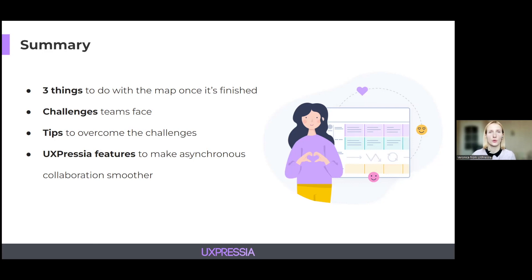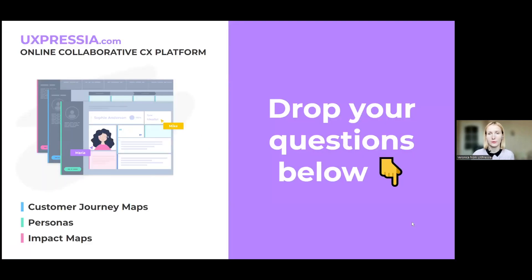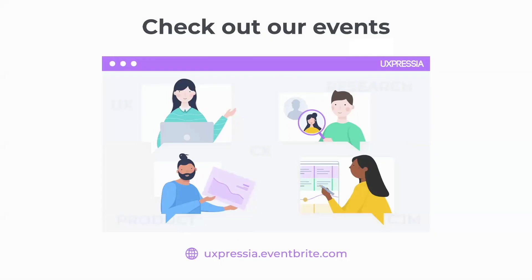And that's what we wanted to share with you today. Let's sum it up. Today we've talked about three things to do with the map once it's finished: ideating and generating ideas, planning out the activities, and keeping the map updated and alive. We've also talked about the challenges teams face and provided tips to overcome them, and highlighted some UXpressure features to make your asynchronous collaboration smoother. Once you are done with your collaboration, there is just one thing left — to present your map to your team, stakeholders, or clients. But that's another story. Whatever questions you might have, feel free to drop them below and we will definitely answer them. Thank you for your attention. See you at our next events!